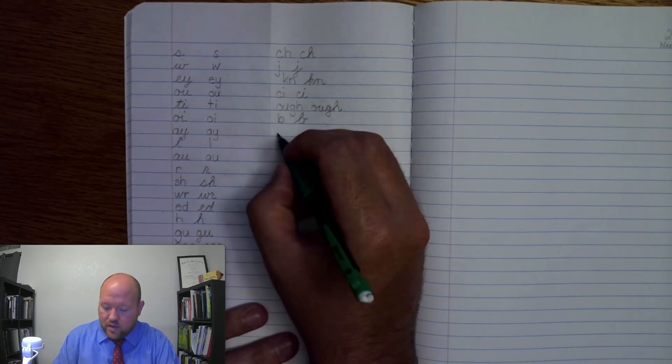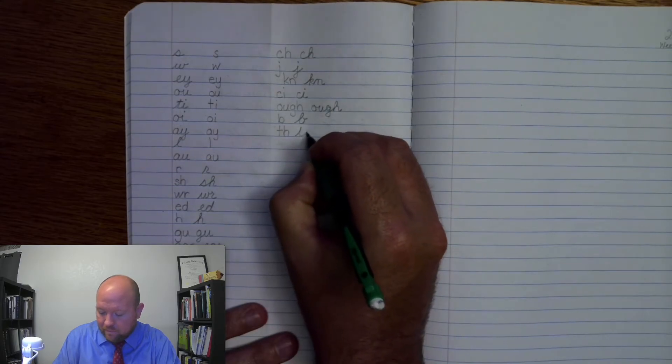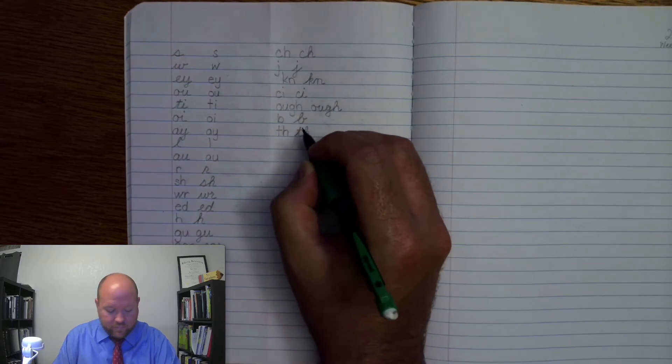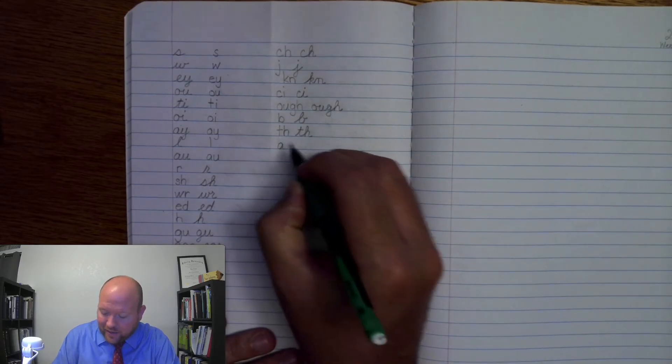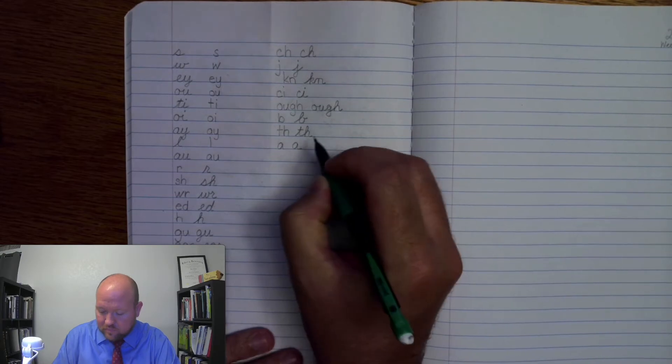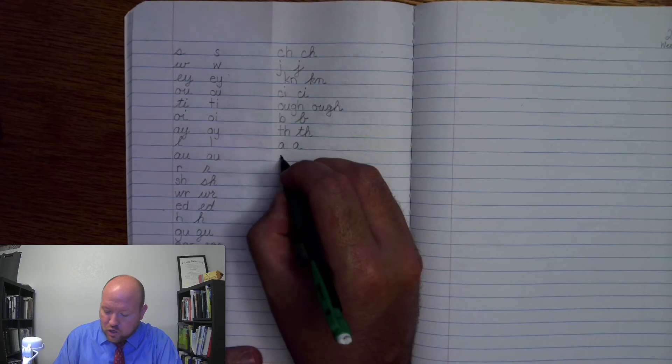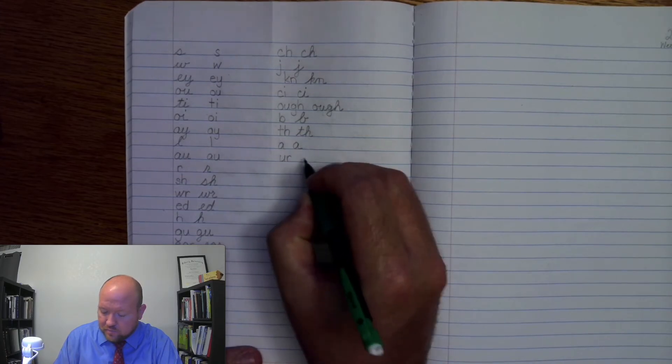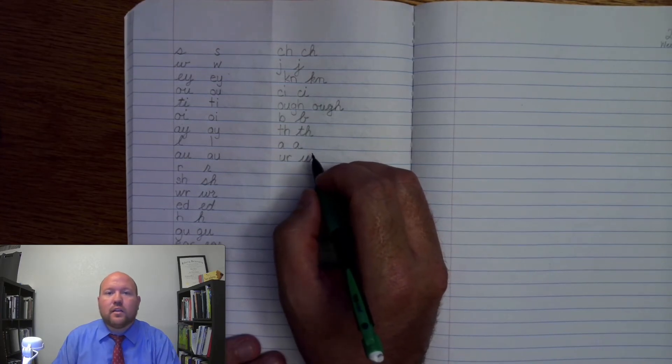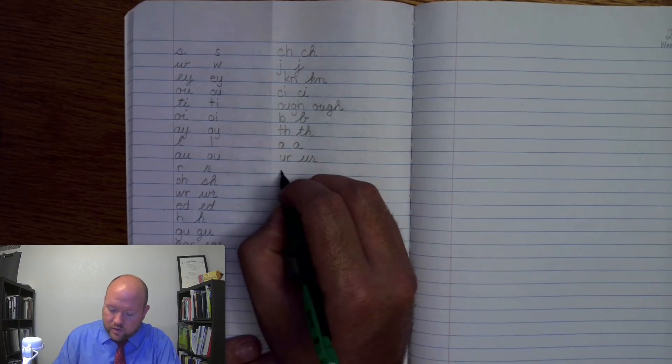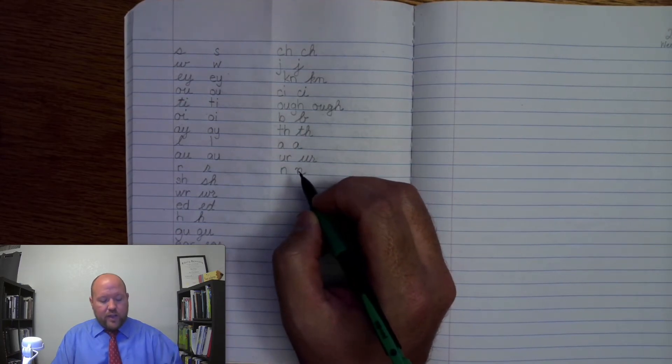Next one. B, buh. Next one. Th, zh, th, zh. Next one. A, ay, aw. A, ay, aw. Next one. Ur, nurse. Ur, nurse. Next one. N, nn.